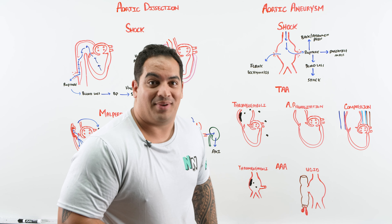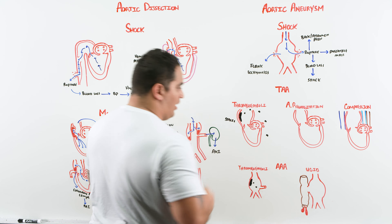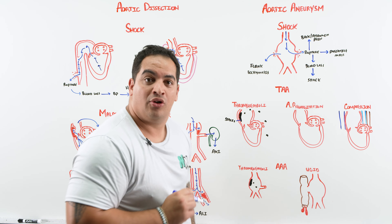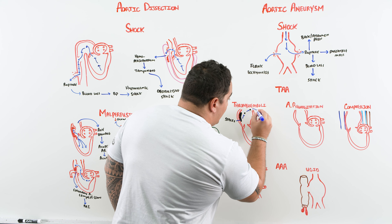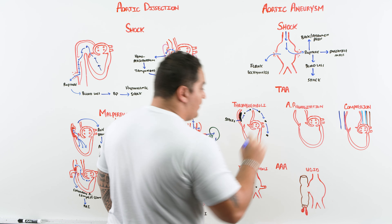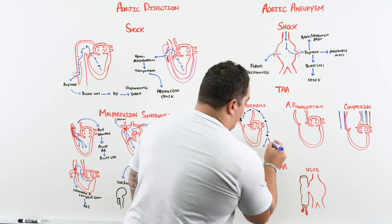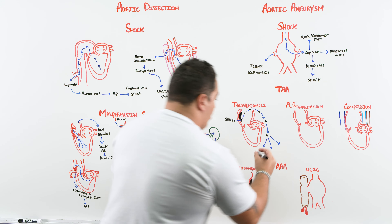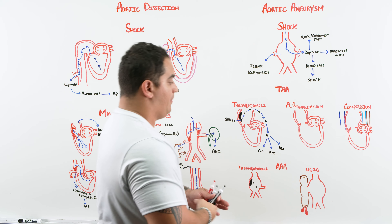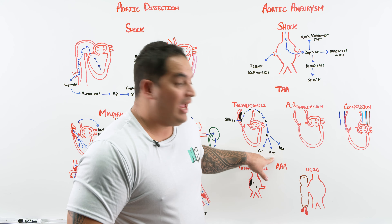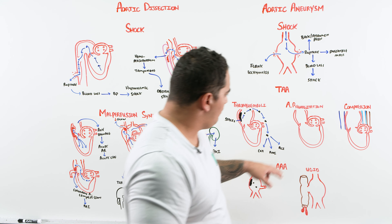One major complication of thoracic aortic aneurysms is thromboembolism. The dilation creates stasis of blood flow, which creates an opportunity for a thrombus to form. That thrombus breaks off as an embolus and can float to the brain, the belly, or the legs, potentially causing a stroke, acute mesenteric ischemia, or acute limb ischemia.